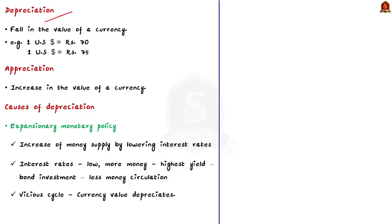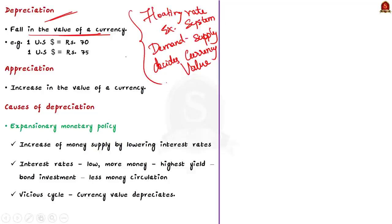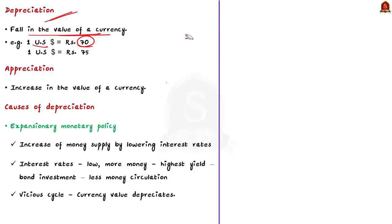Depreciation of currency refers to a fall in the value of a currency in a floating exchange rate system. In the floating rate system, demand and supply determine the value of the currency. Rupee depreciation refers to the fall in the value of the Indian rupee against the US dollar — it means that the rupee has become less valuable and weaker against the US dollar. For example, let the value of 1 US dollar be equal to rupee 70. But this month, the value of 1 US dollar is equal to rupee 75. Only if we pay rupee 75 are we getting 1 dollar now — we are paying more but getting less. This is called depreciation of rupee.